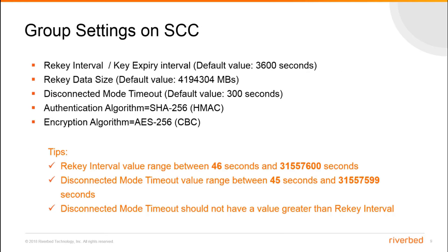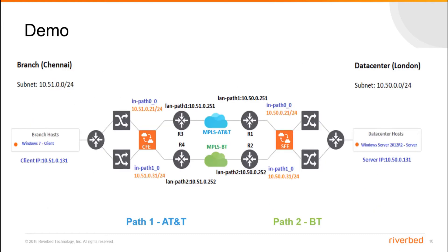Secure transport group settings on SCC can be configured under Manage Services and Secure Transport. There are five attributes. Rekey interval: the time after which the secure transport controller will generate new security keys and push them out to the secure transport members. Rekey data size: the total data size encrypted by all peers using a certain security key, after which the controller generates a new key. Disconnected mode timeout: the amount of time in seconds the secure transport members can operate while disconnected from the controller. Authentication algorithm is SHA-256, and encryption algorithm is AES-256.